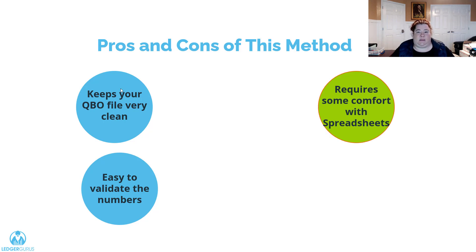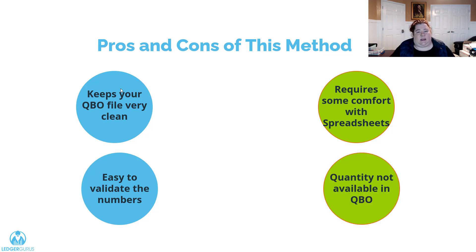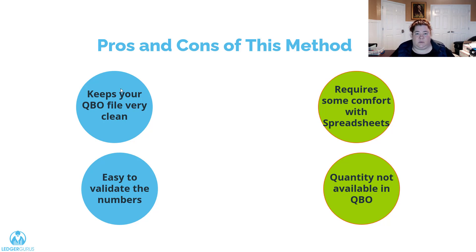Some disadvantages of this method: it requires some comfort level with spreadsheets, which I try to walk through in this video, but spreadsheets can still intimidate people. Second, the quantity is not tracked in QuickBooks Online with this method. Sometimes people use QuickBooks as an operational tool to track inventory quantity available, and the method I'm going to show isn't tracking quantity — whereas the item-by-item method in QuickBooks, if kept clean, can serve as both a value tracker and a quantity tracker.